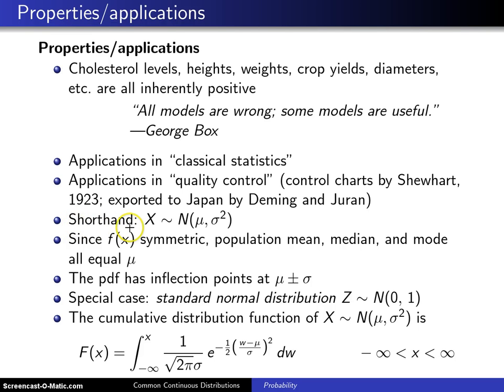The shorthand, as indicated on the previous page, for a normal random variable is: X is distributed as a normal random variable with population mean μ and population variance σ².